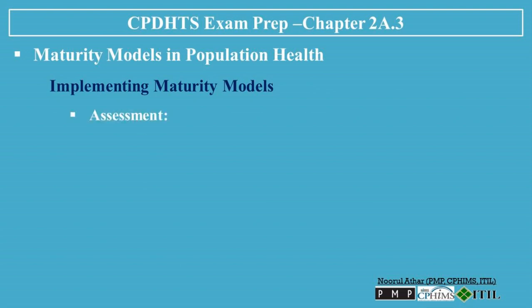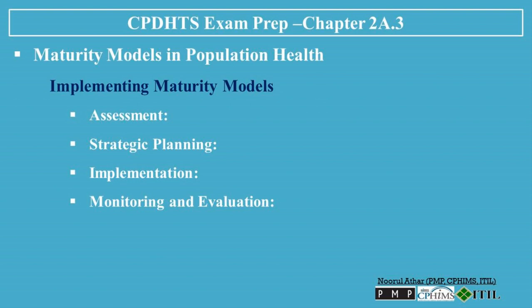Implementing Maturity Models. Assessment: Conduct an initial assessment using the maturity model to determine the current state of population health management. Strategic Planning: Based on the assessment, develop a strategic plan that addresses identified gaps and outlines initiatives to move to higher levels of maturity. Implementation: Execute the plan with clear goals, timelines, and responsibilities, utilizing technology and process improvements to support advancement. Monitoring and Evaluation: Regularly monitor progress and evaluate the impact of new strategies, using insights from these evaluations to refine approaches and further progress through the maturity model.